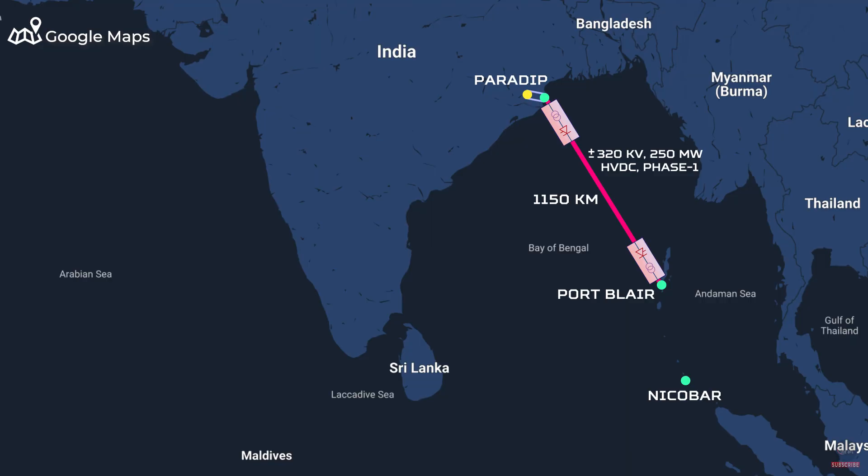The estimated cost of the first phase of the project is around Rs. 31,000 crore and it is expected to be completed within the next 5 years. The capacity of the cable would be 500 MW, considering future demands. In phase 2 of the project, another 250 MW HVDC terminal would be added at both Paradip and Nicobar Islands, along with undersea cable connection from Port Blair to Nicobar Islands to meet the electricity demand of Nicobar Islands.